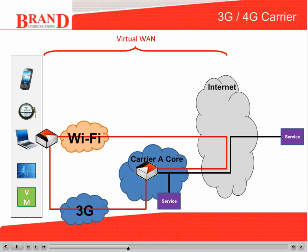Carrier A installs Apollo client software on remote devices and Apollo server software in its core network, creating a virtual wide area network between them. This allows the remote device to behave as if it's always on the carrier's network, even when roaming on third-party Wi-Fi networks. Carrier A is able to manage the IP address of the remote device, move traffic to Wi-Fi networks wherever available, and shape, prioritize and secure the customer's traffic on both networks, ensuring the best quality of experience.